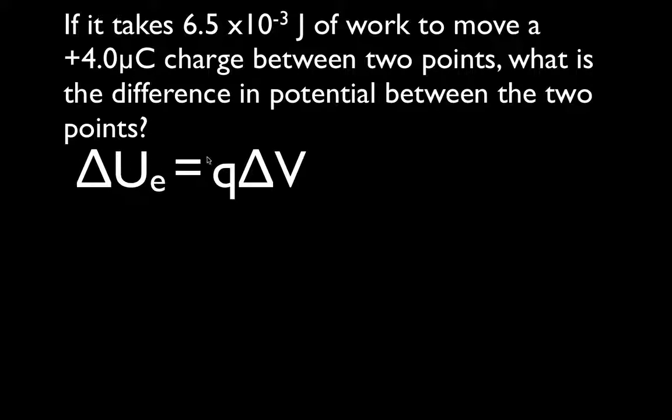Now, we don't want to find the amount of work or the change in potential energy because we're given that, 6.5 times 10 to the minus 3 joules of work. We want to find the potential difference. The change in potential is the potential difference. So, we're going to solve this equation for the potential difference, and it equals the change in potential energy divided by the amount of charge.